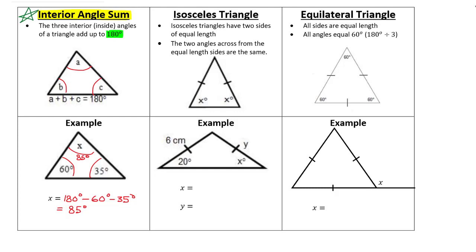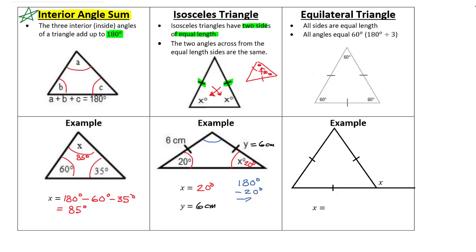An isosceles triangle has two sides of the same length, shown by hash marks. The angles across from those equal sides are always the same — not where they meet, but the two opposite corners. If this angle is 20 degrees, then the angle across from the equal side is also 20 degrees. Using the interior angle sum rule, 180 minus 20 minus 20 gives 140 degrees for the top corner.